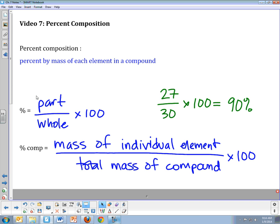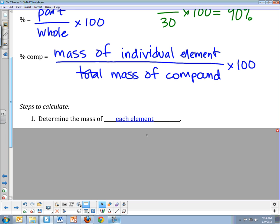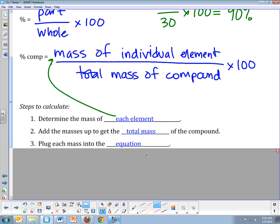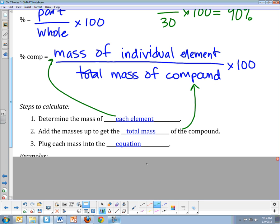There are three basic steps. The first step is you have to find the mass of each element. That's where your periodic table is going to come in handy, looking up the atomic masses. Once you have those, you need to find the total mass. So you add them up, you get your total mass, then you're going to plug each of those into your equation. Your answer is going to have the number of elements. So if you have something like H2O, you're going to have a percent for hydrogen, H, and you're going to have a percent for oxygen, O.